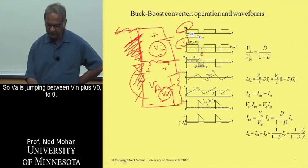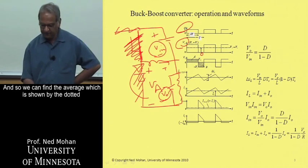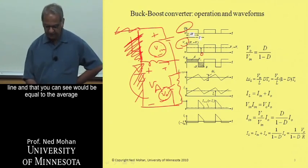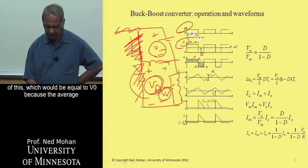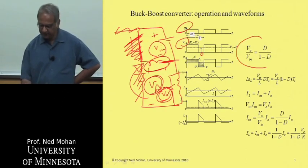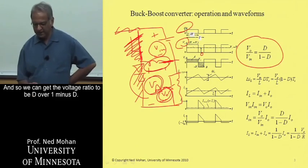So VA is jumping between V in plus V zero to zero. And so we can find this average, which is shown by the dotted line, and that you can see would be equal to V zero, because the average voltage across the inductor is zero. And so we can get the voltage ratio to be D over 1 minus D.